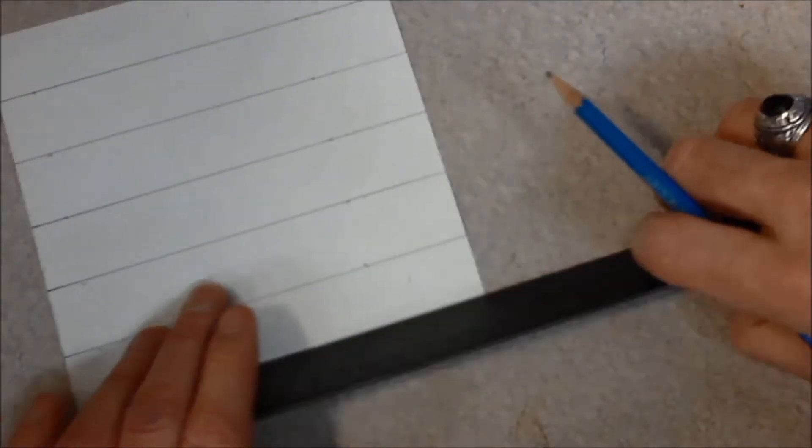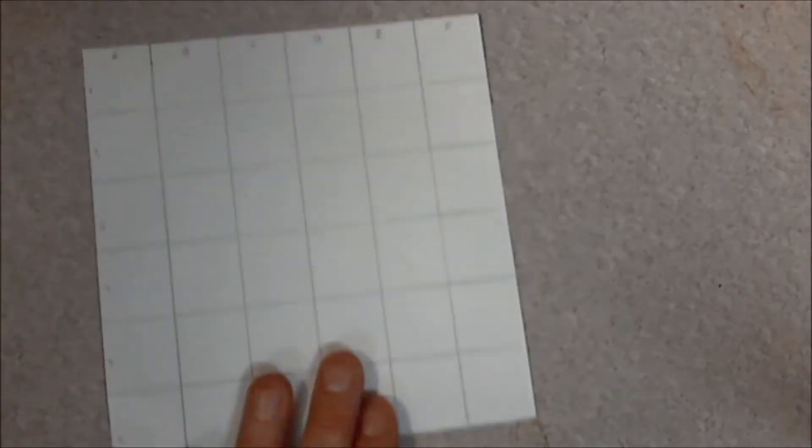And then of course I would connect bump, bump, bump, bump, bump, bump, until I get a piece that looks like this. So this is my grid.